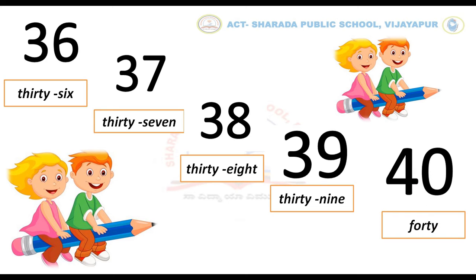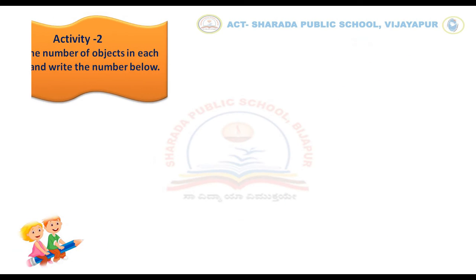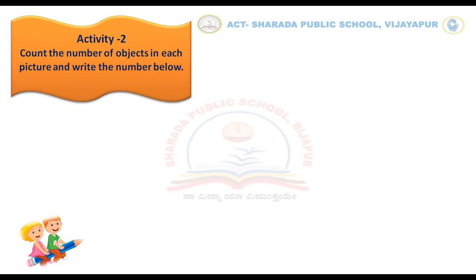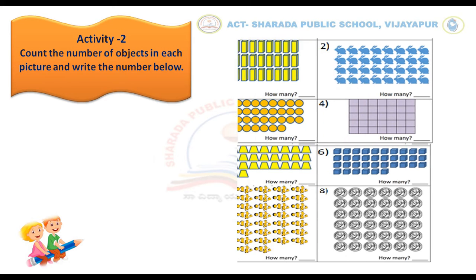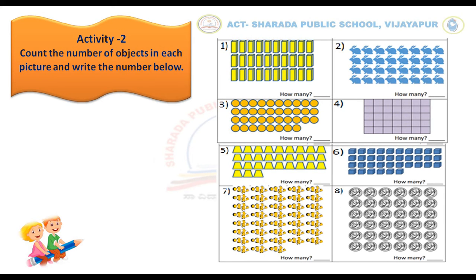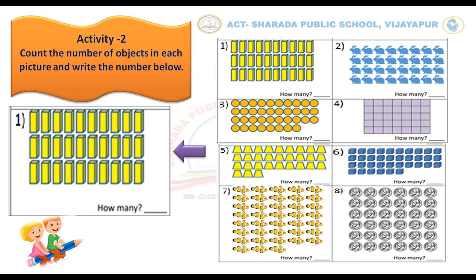Done, children? Let us move to our next activity. That is, count the number of objects in each picture and write the number below. In this activity, kids, you have to count the objects and write the correct number. For example, kids, let us count these objects one by one along with me.